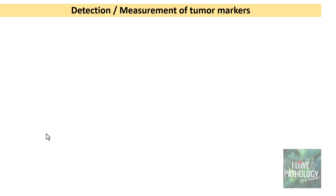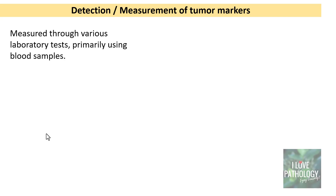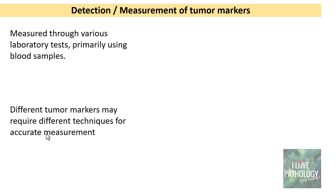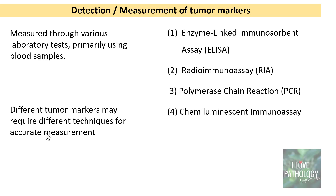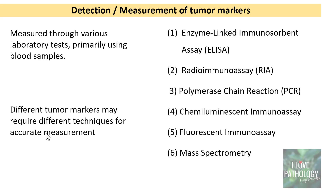Having known the utility, you should know how tumor markers are measured. They are measured through various laboratory tests, primarily using blood as a sample, since we are looking at serum tumor markers. Different tumor markers may require different techniques for accurate measurement. These techniques include enzyme-linked immunosorbent assay (ELISA), radio-immunoassay, polymerase chain reaction (PCR), chemiluminescent immunoassay, fluorescent immunoassay, and mass spectrometry.